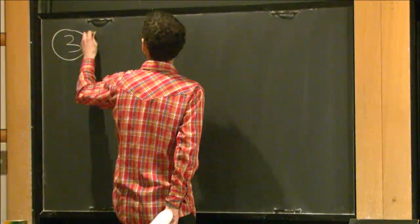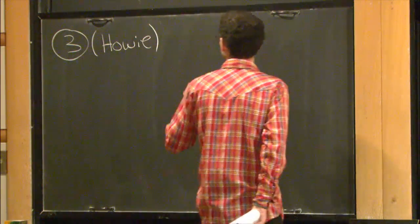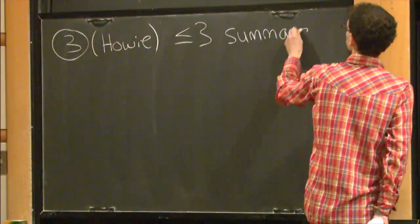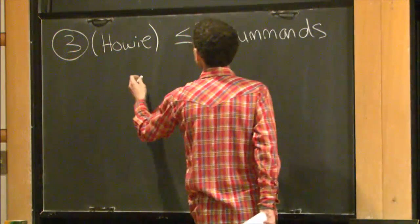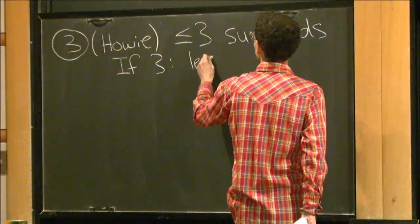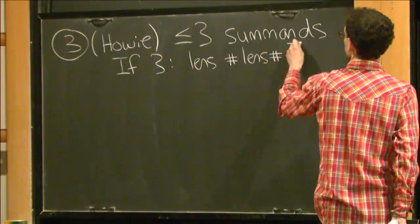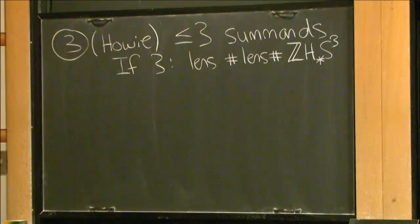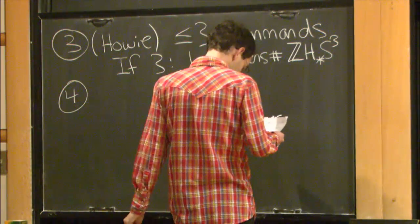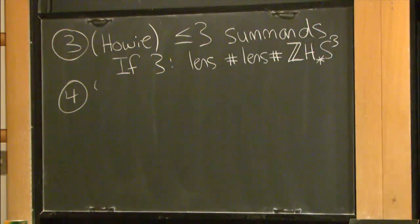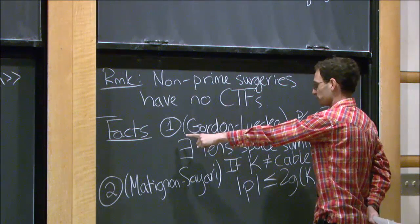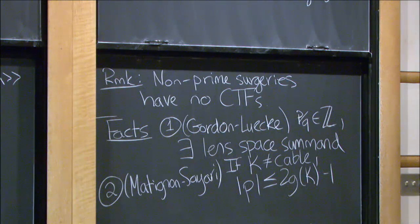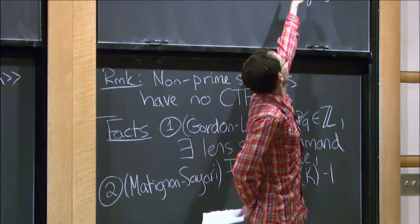We can also ask about the number of summands. This is heavily constrained: there are at most three summands. If you see three, something very specific happens—there's the requisite lens space, then another lens space, and then an integer homology sphere. If you believe the Cabling Conjecture and use these results, you can show that you can only have two summands for cables, essentially because one surgery would be non-integral.